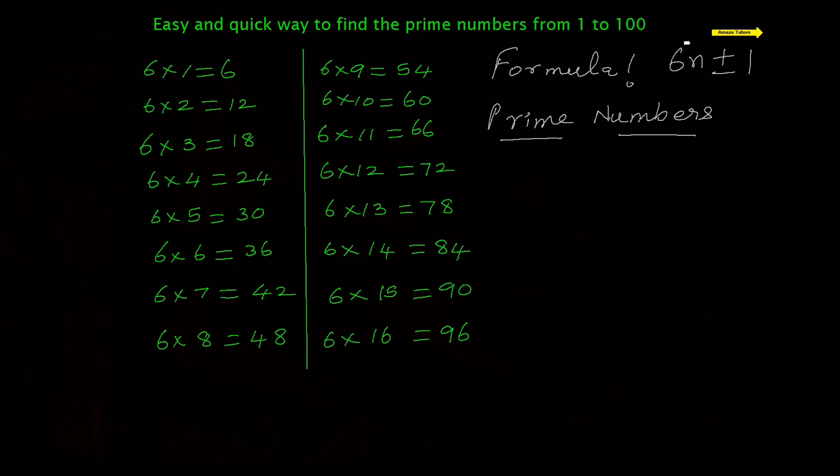And you are going to add 1 with that and subtract 1 from that, and we are going to list the prime numbers. Now let me explain. Before that, we are going to write all the prime numbers up to 6 we know them already: 2, 3, 5.